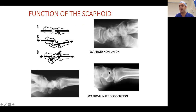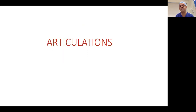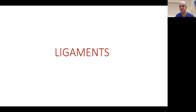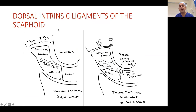Scapholunate dissociation and scaphoid nonunion are the two common things you see in practice as a hand surgeon. In terms of articulations, the scaphoid articulates with the scaphoid fossa of the radius, lunate, capitate, trapezium, and trapezoid. Ligaments are important. Carpal bones have intrinsic ligaments between the two carpal bones and extrinsic ligaments. Looking at the dorsum, the dorsal scapholunate ligament is an intrinsic ligament — relevant because scapholunate injuries are very common.